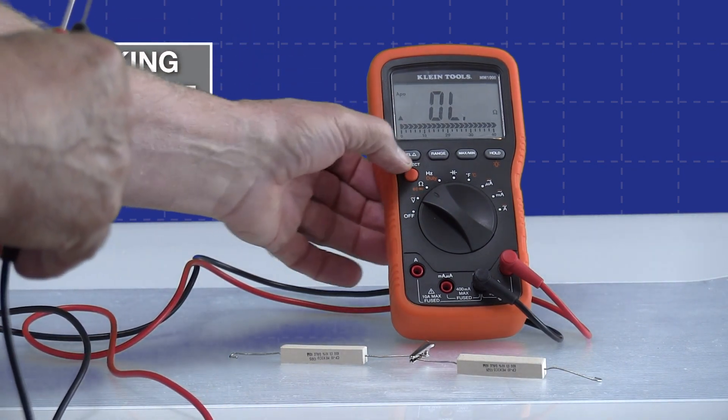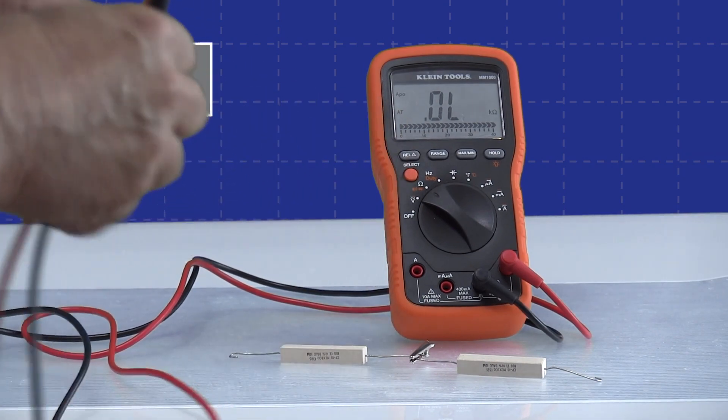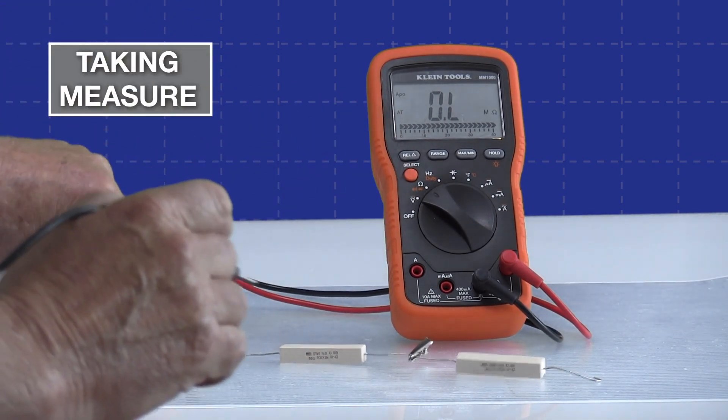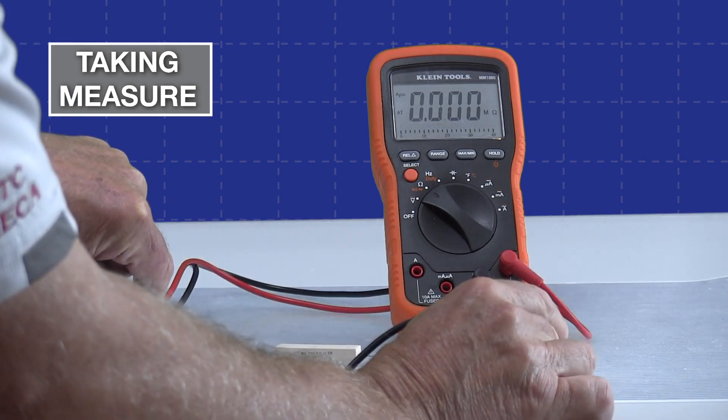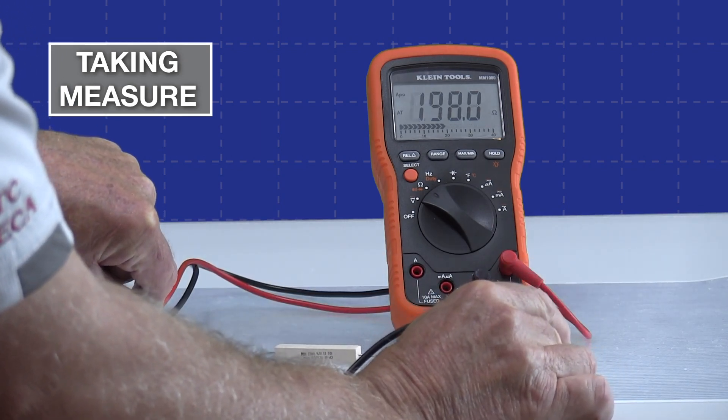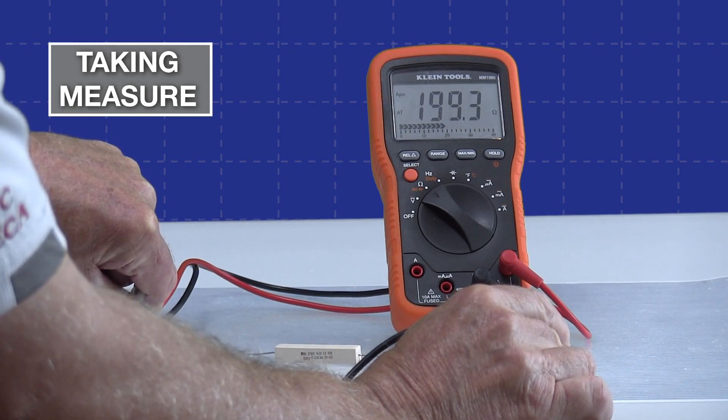Let me shut this thing off again, or get it out of relative mode again. And I'll take another measurement back in its normal resistance measurement mode. And you can see we're back to reading 200 ohms.